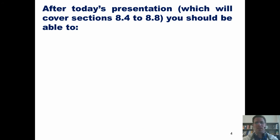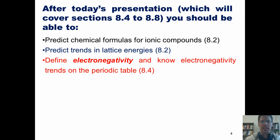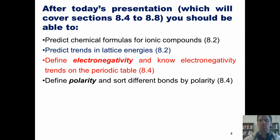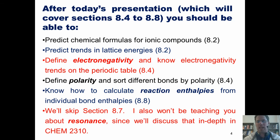After today's presentation, which will cover sections 4 to 8 of chapter 8, you should be able to: predict chemical formulas for ionic compounds, predict trends in lattice energies, define electronegativity and know electronegativity trends on the periodic table, define polarity and sort different bonds by their polarities, and know how to calculate reaction enthalpies from individual bond enthalpies. Now you should note that we will skip section 8.7. I also won't be teaching you anything about resonance because we'll discuss that in depth in Chem 2310, which is organic chemistry.